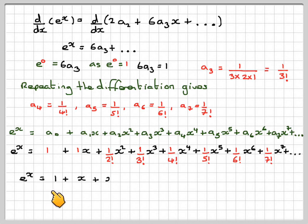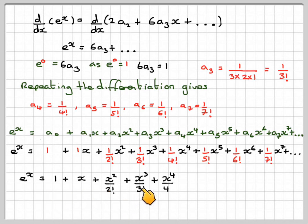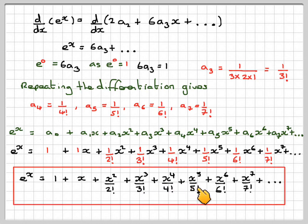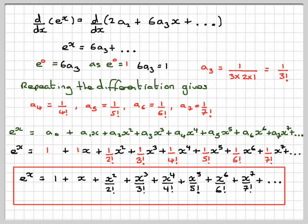So e to the x equals 1 plus x plus x squared over 2 factorial plus x to the 4 over 4 factorial plus x to the 5 over 5 factorial plus x to the 6 over 6 factorial plus x to the 7 over 7 factorial, and so on.